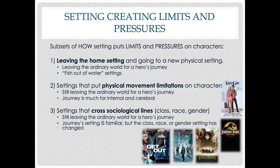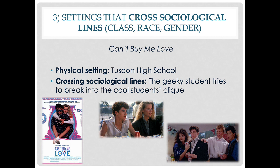The third subset is settings that cross sociological lines — class, race, and gender. The character is still leaving the comfort of their ordinary world for a hero's journey, but the journey setting might be familiar while the class, race, and gender setting has changed. A great example is the movie Can't Buy Me Love, where a geeky high school student tries to break into the cool students' clique. His physical setting hasn't really changed — he's still going to the same high school — but the pressure on him is different. He understood what it meant to be geeky in that setting, but now he's trying to be cool, and the cool kids have certain rules, pressures, and limits that they put on each other. The main character doesn't really change his physical setting, but he does have to cross those sociological lines on the hero's journey.